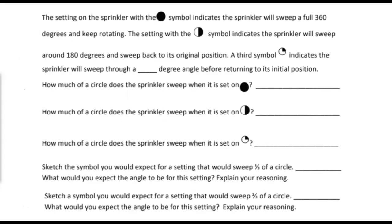The setting on the sprinkler with the full circle symbol indicates the sprinkler will sweep a full 360 degrees and keep rotating. The setting with the half circle symbol indicates the sprinkler will sweep around 180 degrees and sweep back to its original position. A third symbol indicates the sprinkler will sweep through a, well it looks like one-fourth of the circle.